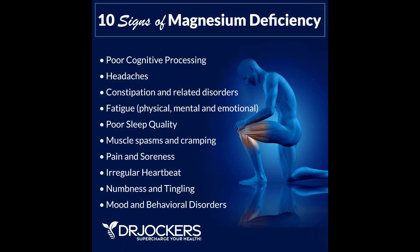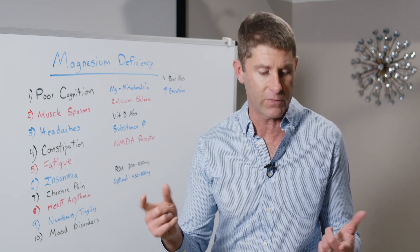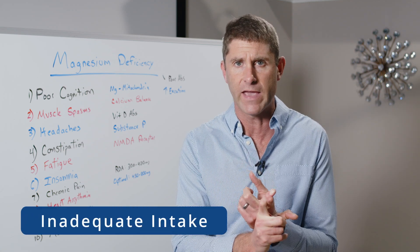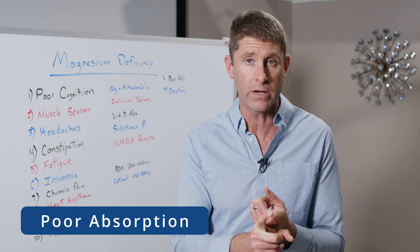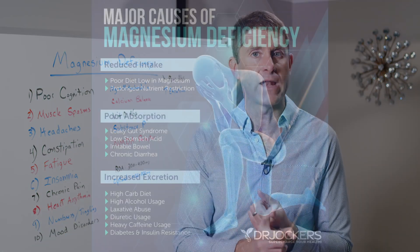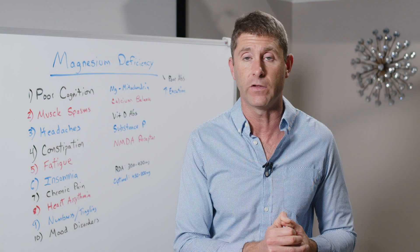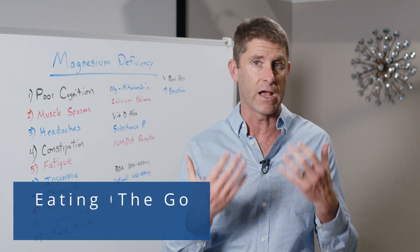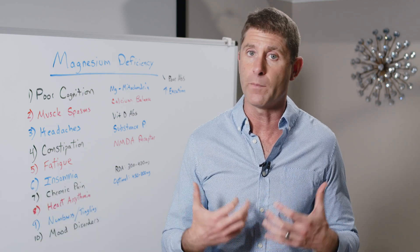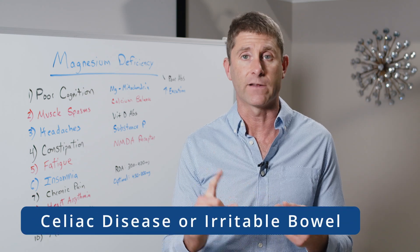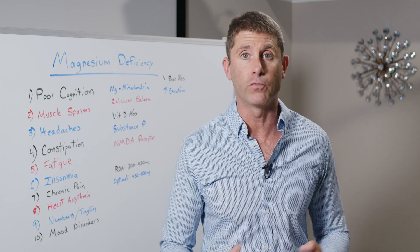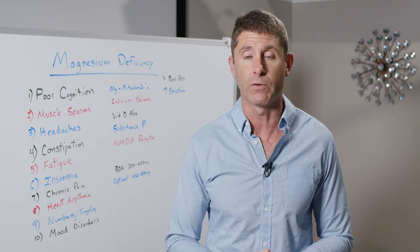Numbness and tingling can occur with a magnesium deficiency due to the association with substance P and pain. The reasons people develop magnesium deficiency are either inadequate intake or poor absorption. We may not be consuming enough, or we may not be absorbing enough because we don't have enough stomach acid. Stomach acid is key for chelating minerals like zinc, magnesium, and calcium. People with celiac disease or irritable bowel syndrome may also not be able to absorb enough magnesium from their diet.